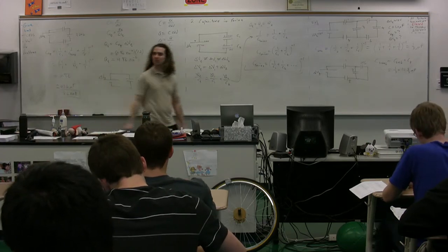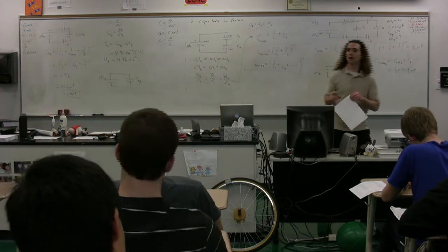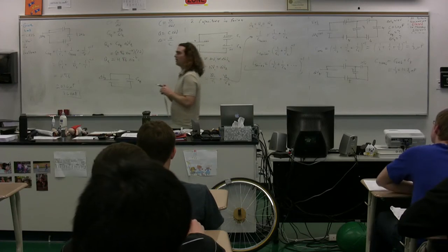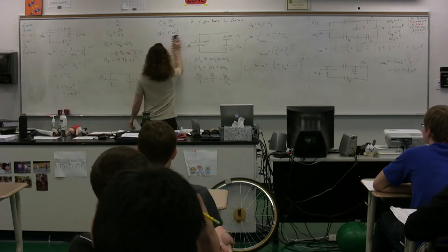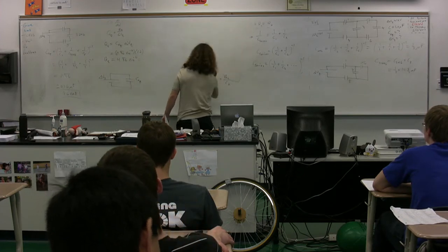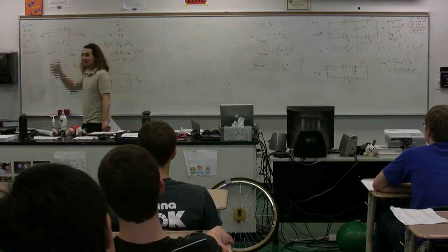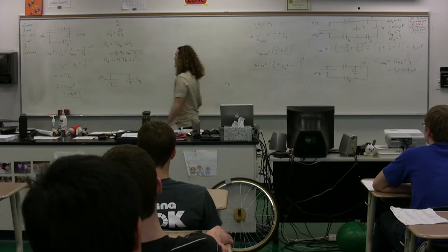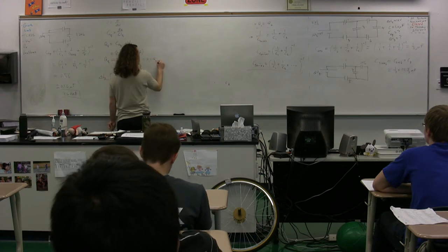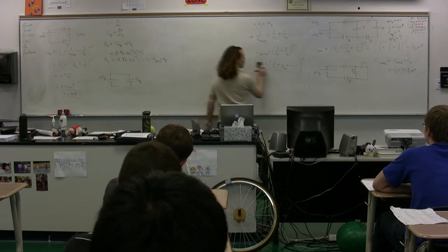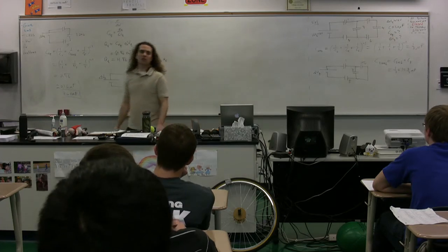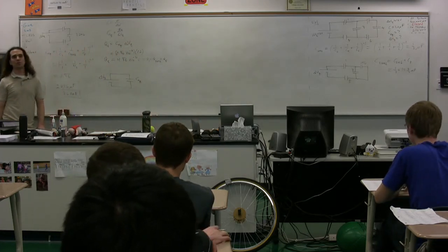We have 4.36 repeating times 10 to the negative 6 Coulombs delivered to this equivalent capacitor. This also tells us the charge on each series element, because C1, C3246, and C5 are all in series — they have the same charge, equal to the charge delivered by the battery. So this equals the charge on capacitor 1, which equals the charge on C3,246, which equals the charge on capacitor 5. We have now found the charge stored on C3,246.